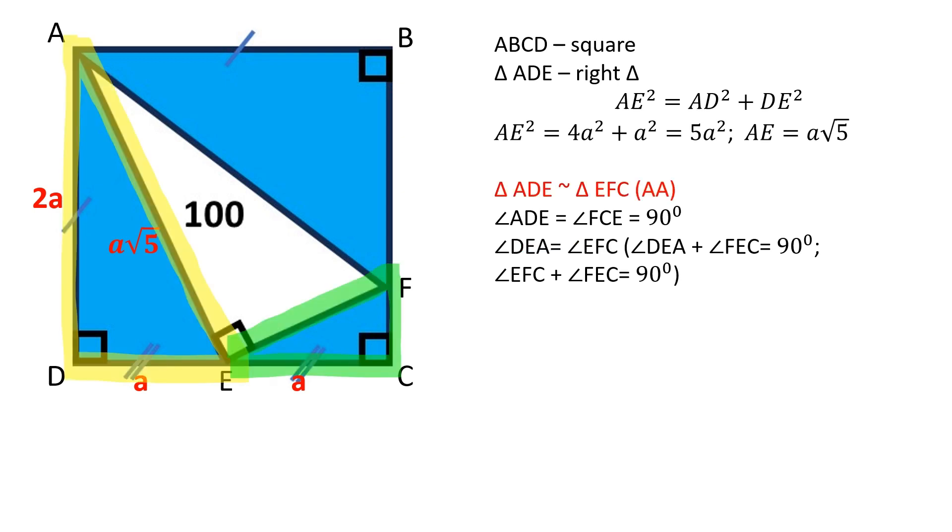The triangles are similar because two pairs of corresponding angles are equal. In similar triangles, the corresponding sides are proportional. AD over EC is equal to AE over EF.